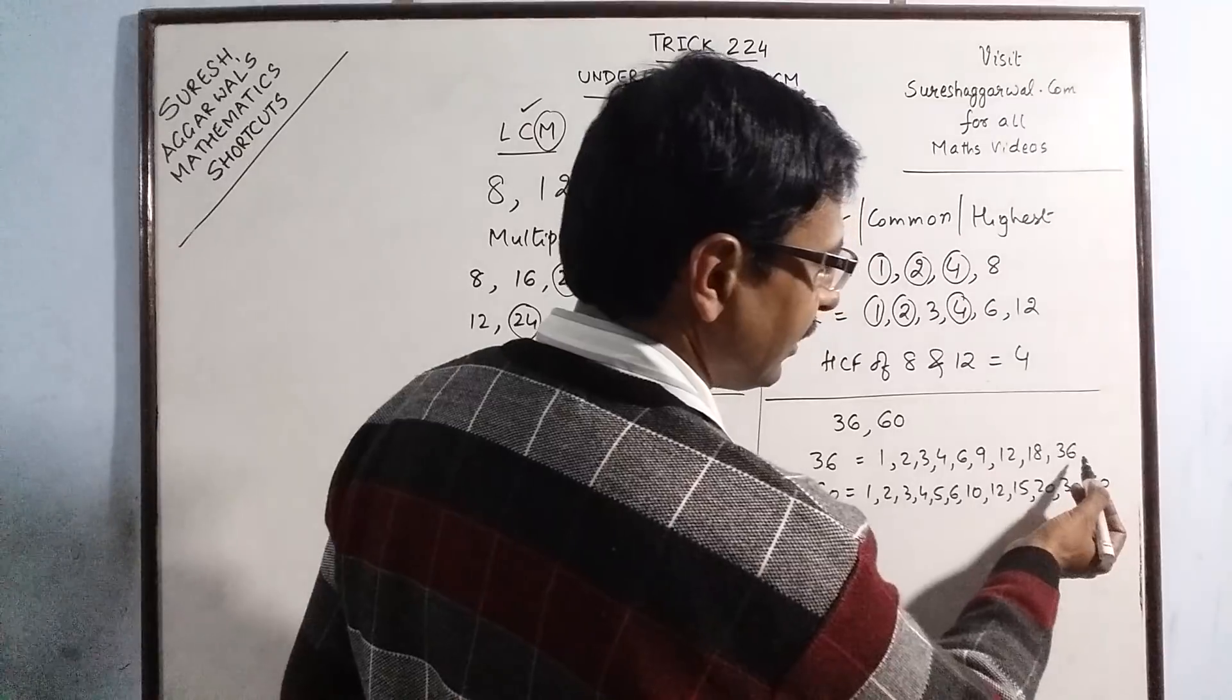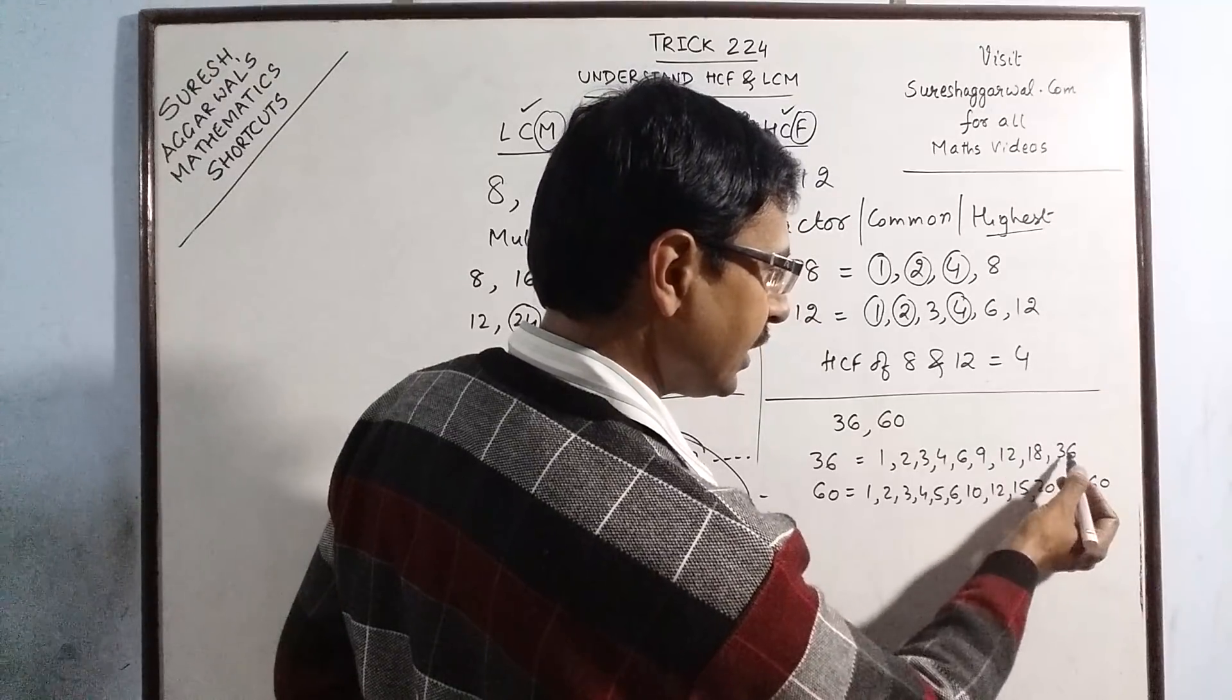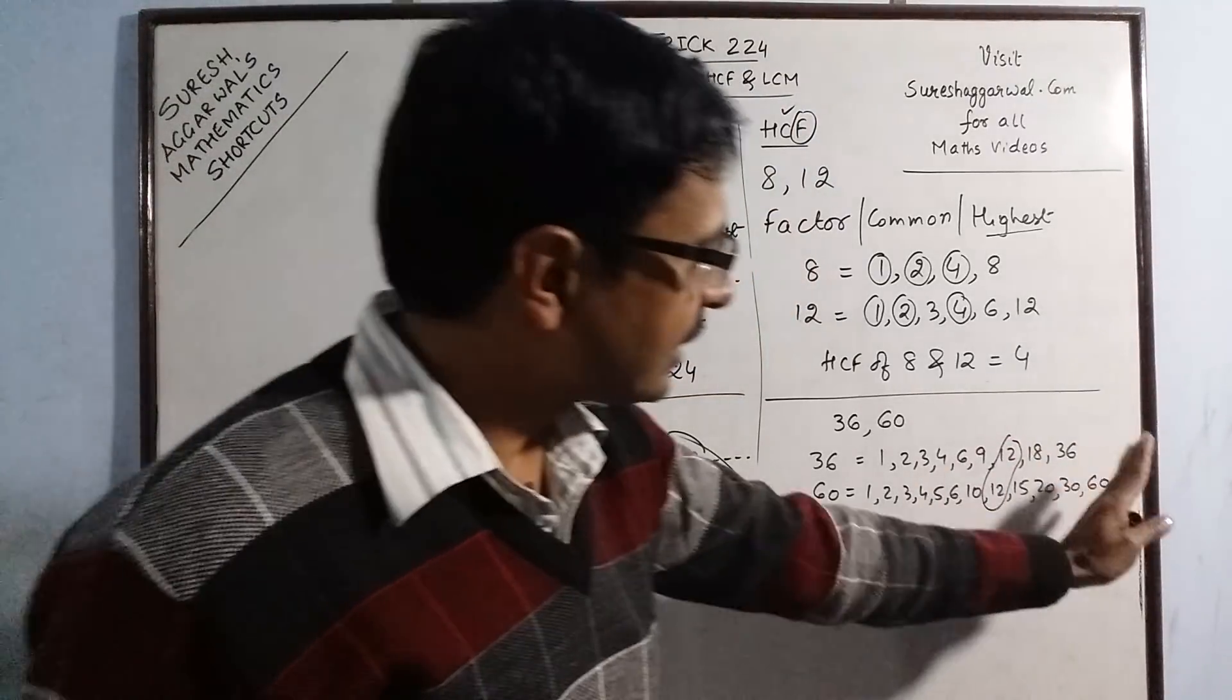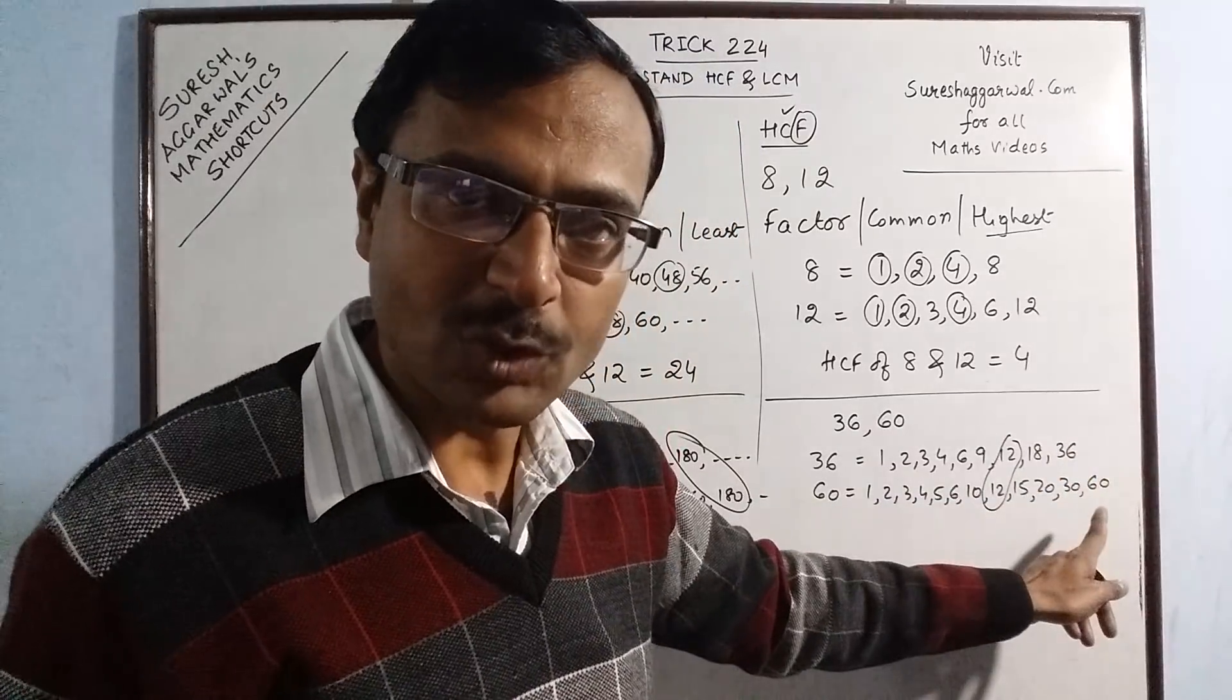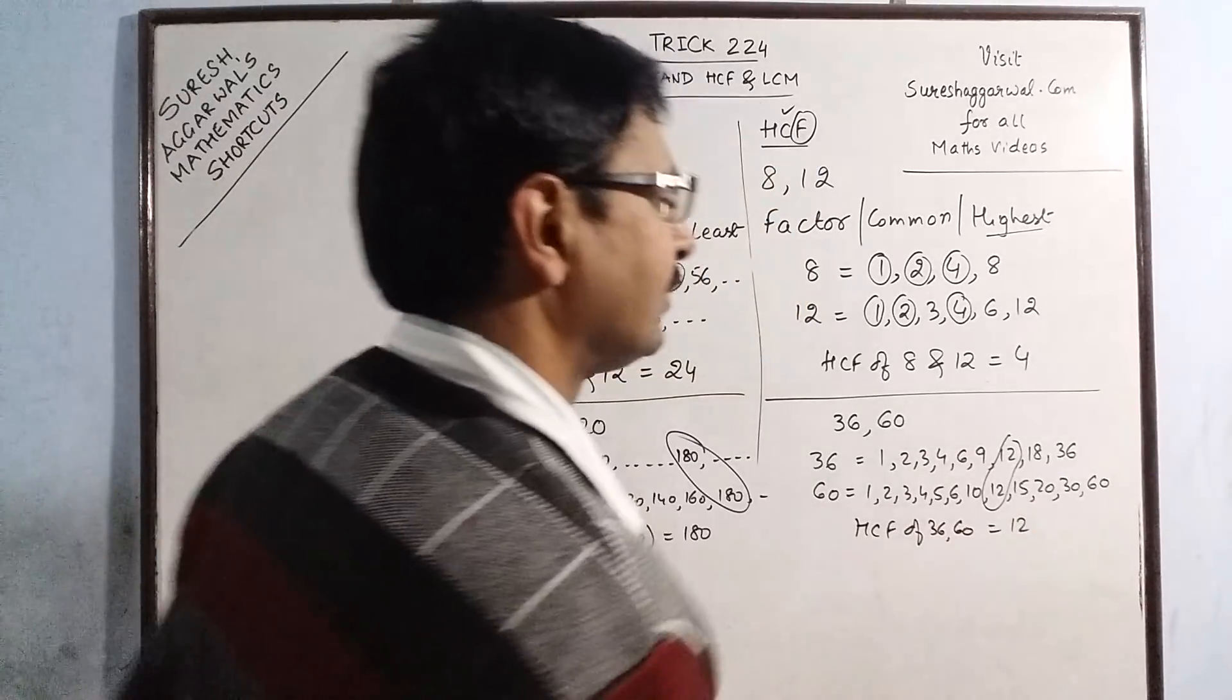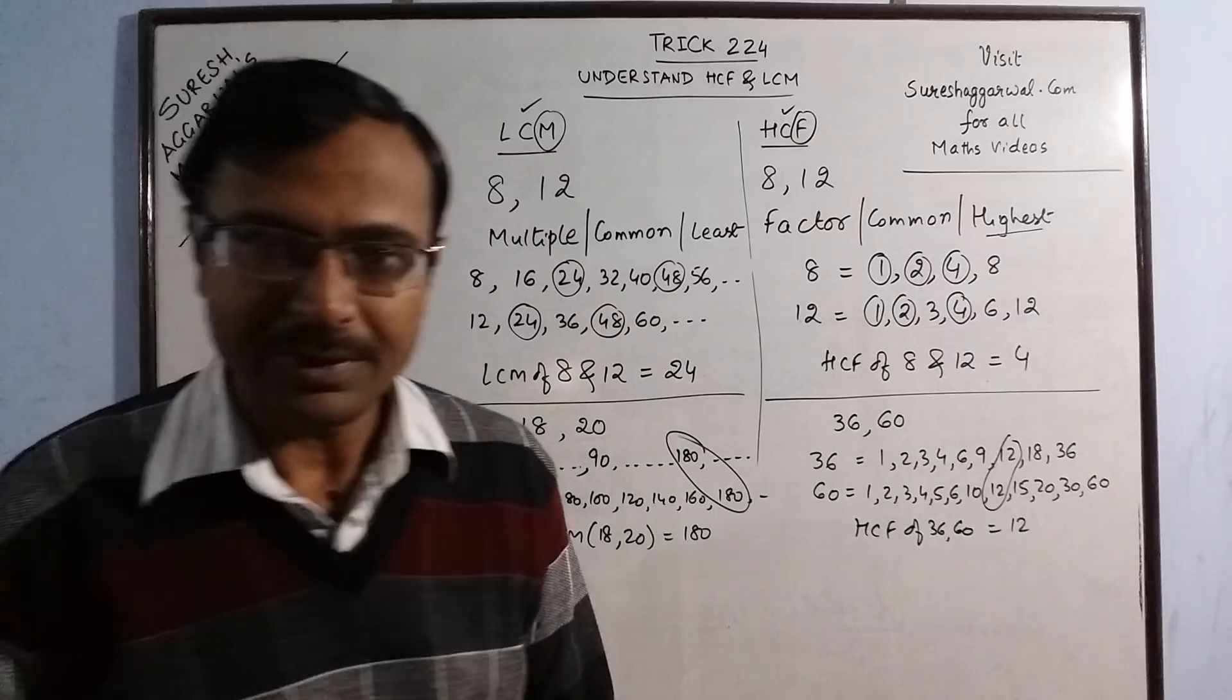Obviously, I will start from here because we need to find the highest. So 60 is not common, 30 is not common, 36 is not common, 18 is not common, 15, 12. Just see 12. After 12, there is no common factor. Say 15, 18, 20, 30, 36, 60, nothing is common here. So HCF is 12. Likewise, you can take some more examples yourself and try and find the LCM of some more numbers.